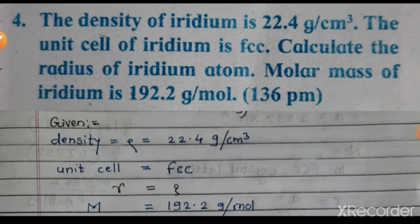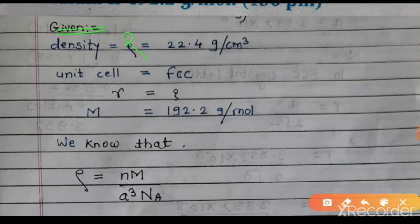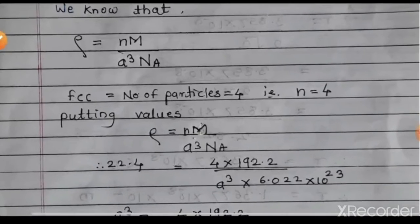Given: density = 22.4 g/cm³, unit cell is FCC, radius r = unknown, molar mass M = 192.2 g/mol. Using the density formula: 22.4 = (4 × 192.2) / (a³ × 6.022 × 10²³).